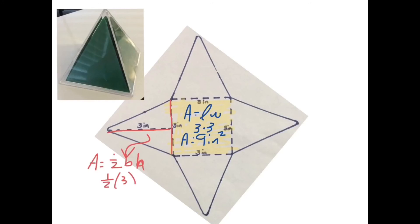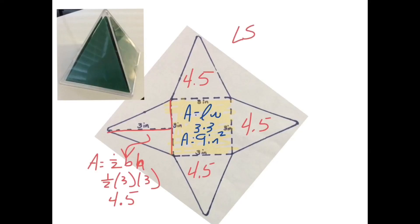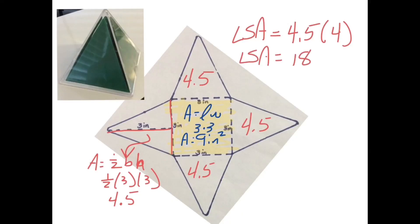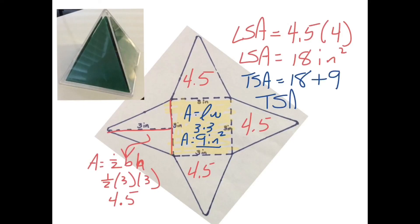One-half of three times three gives us 4.5 square inches for each triangle. These triangles are our lateral faces — the ones that are not the bases. Our lateral surface area is 4.5 times 4 triangles, giving us 18 square inches. Adding the base of 9 square inches, our total surface area is 27 square inches.